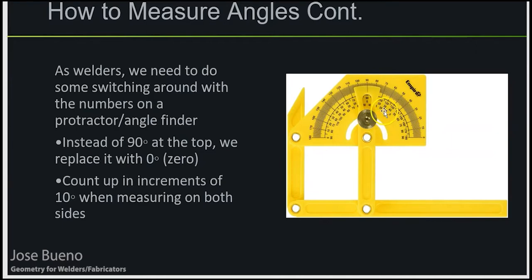Here's a bigger picture of a protractor. You'll notice that on one set of numbers the very top number is 90, and on the second set of numbers it's 0. Many commercial protractors will come with 90 at the very top or in the very center. This is where welders need to switch it up a bit — as welders, we do not start with 90 at the top. Instead, we replace it with 0.